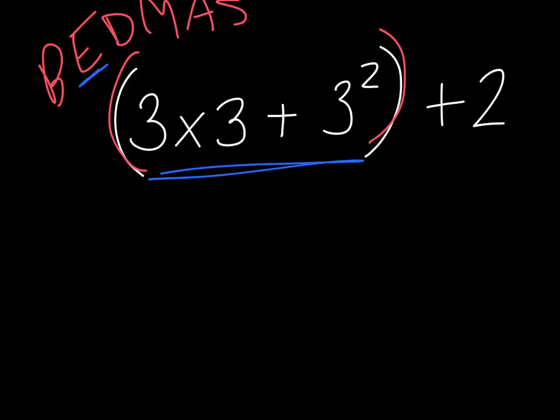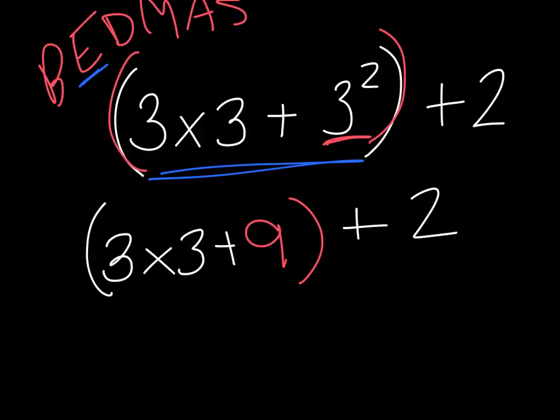So my next step is to continue the bracket. I still leave it. Three times three plus. And I solve the exponent that I've got here. Three to the power of two. That's three times three, which is nine. And still keep room to remember to add my two at the end. Now I can go to the next step in my bracket, which is division and multiplication. And that's here. Three times three. So my new expression is going to be nine, three times three, plus nine, plus two.